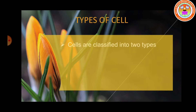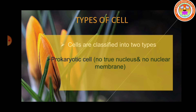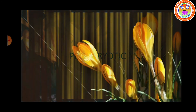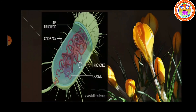Generally, cells are classified into two types. One is the prokaryotic cell, which has no true nucleus and no nuclear membrane. The second one is the eukaryotic cell, which has the true nucleus with a nuclear membrane. So the two types of cells are prokaryotic cell and eukaryotic cell.